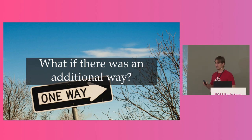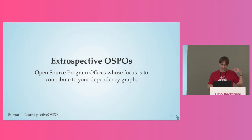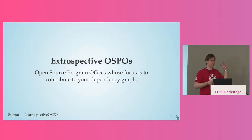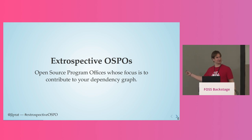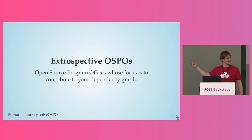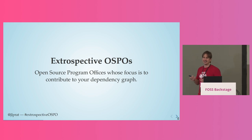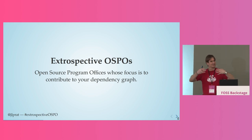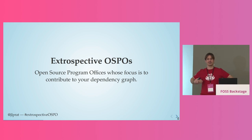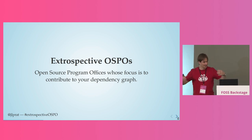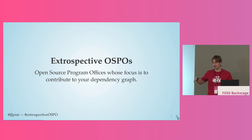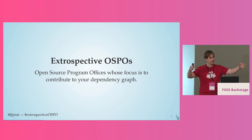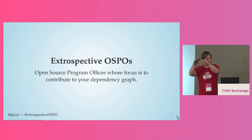I am here on the funding track of FOSS Backstage to tell you: what if there was another way to help those projects that doesn't rely on funds? What I propose is Extrospective OSPOs. It's a mouthful, and nobody uses this term, so if you search for it you'll only get these links. Extrospective plays on introspection — looking towards the inside — so extrospective looks towards the outside. It means you have an open source program office whose focus is to contribute to your dependency graph.